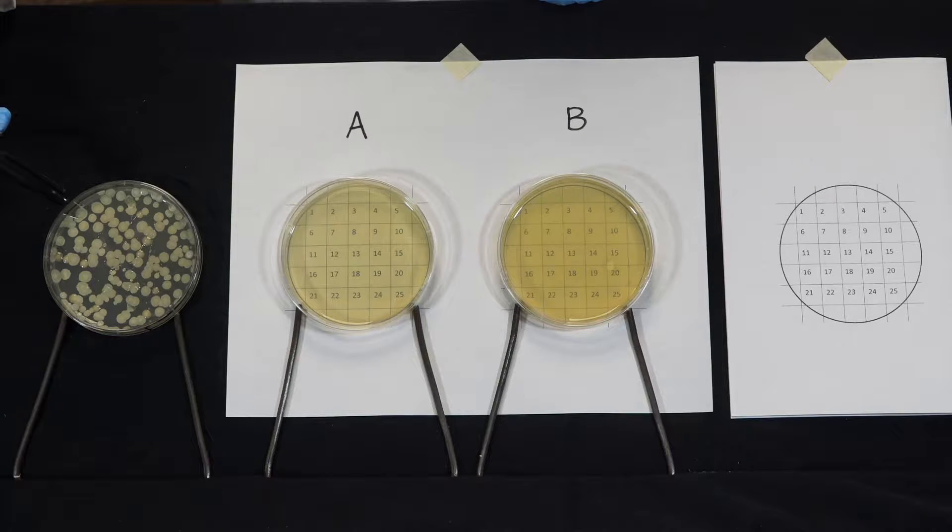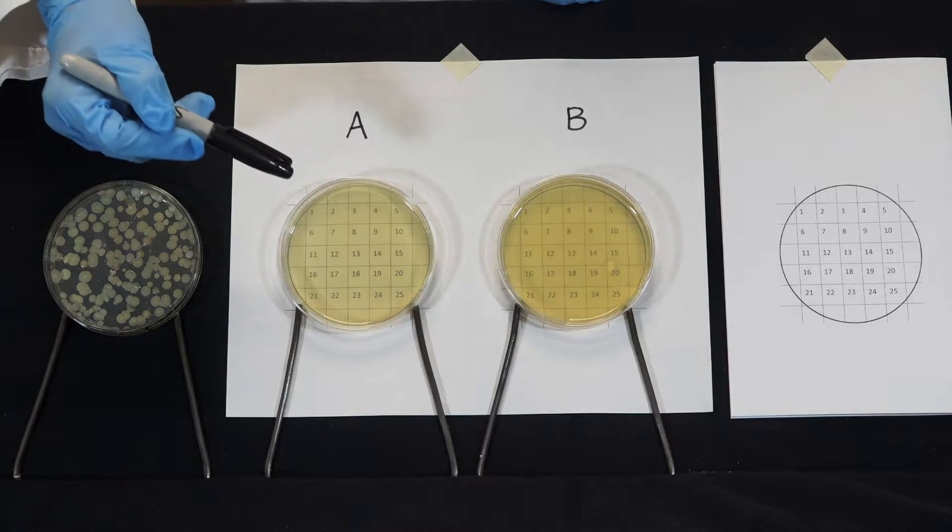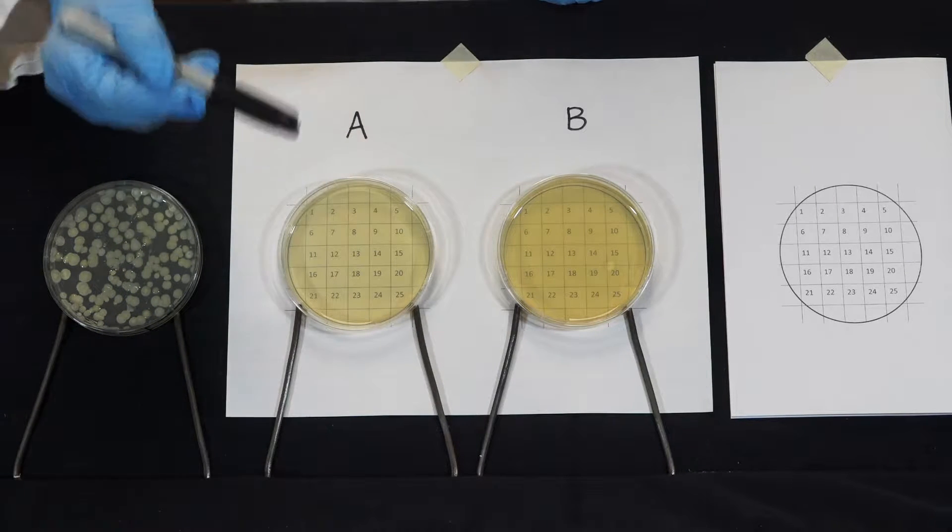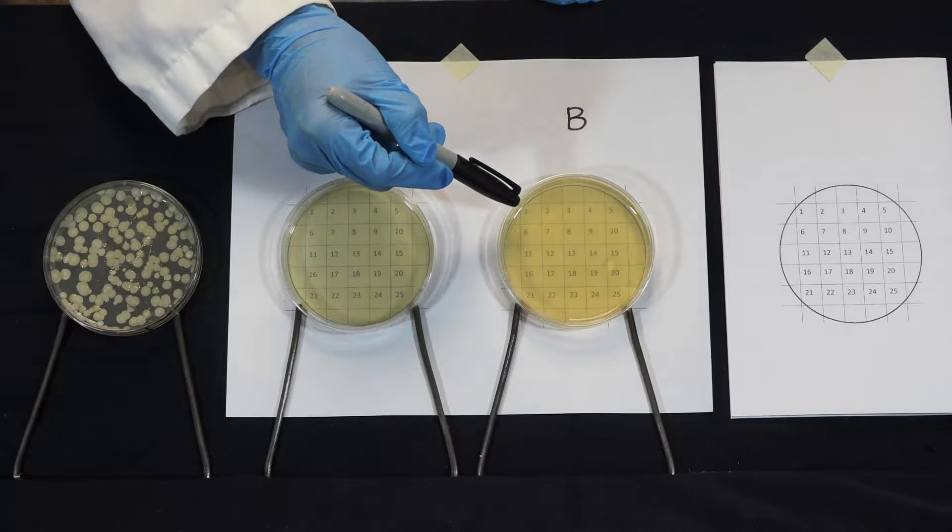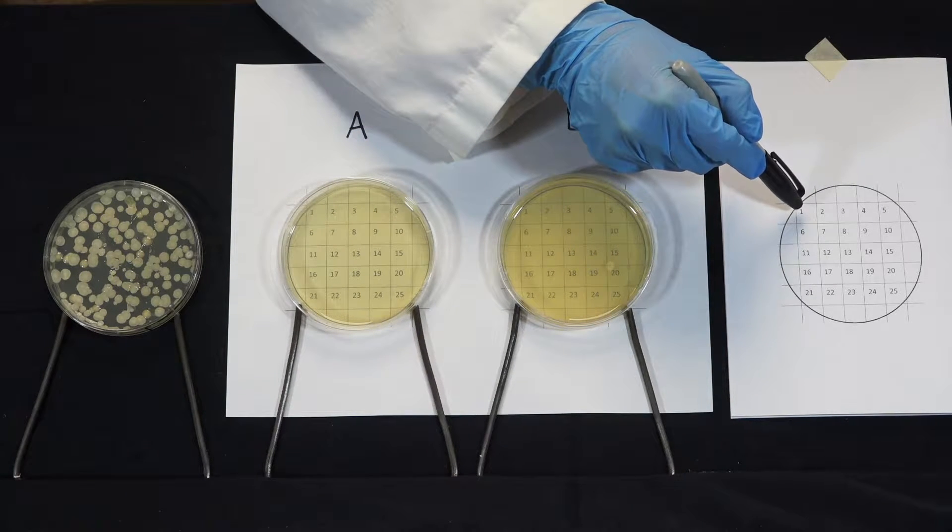We're going to pick a colony from this plate and inoculate square one on plate A and square one on plate B. Then we'll mark off that we've inoculated square one.